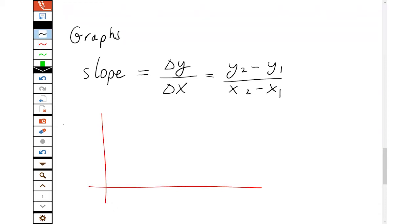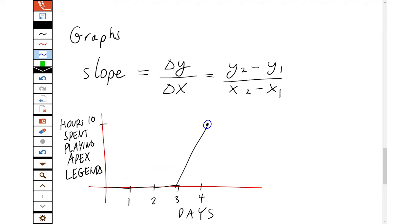Let's say I have a graph which is the hours spent playing Apex Legends, which I like to do from time to time. And so on the y-axis, the x-axis is then days. So one day, two day, three day, four days. And the hours spent, I get to 10. But it's just zero, zero, zero, and then 10 hours.